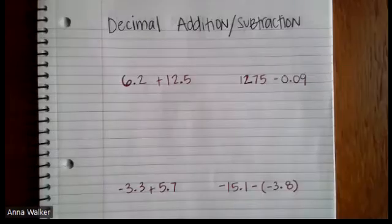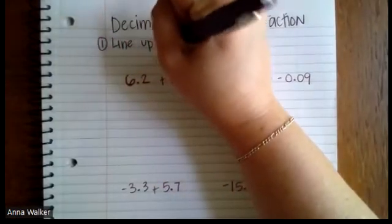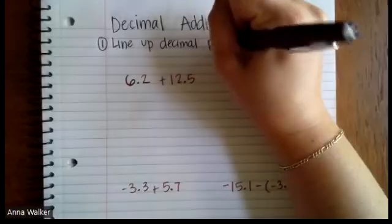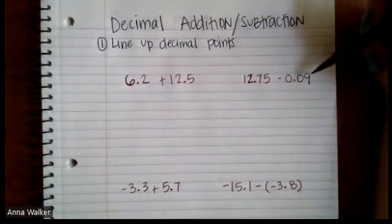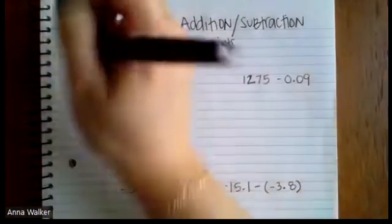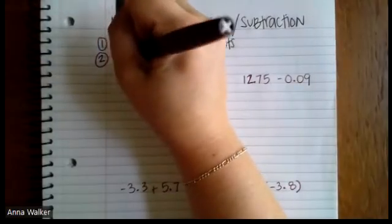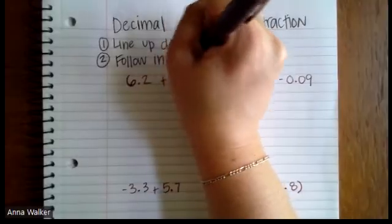All right. So when we talk about adding and subtracting decimals, there's two main things that we need to make sure we do or that we remember. The first thing is when we add or subtract, we want to make sure we line up the decimal points. That's really important. We want to make sure we're adding all of the correct place value. So we're not adding the hundredths with the ones place. The second thing we want to do, as always, is we want to make sure we follow the integer rules.